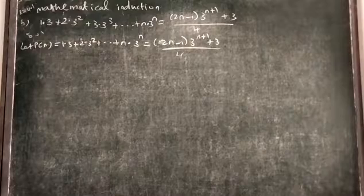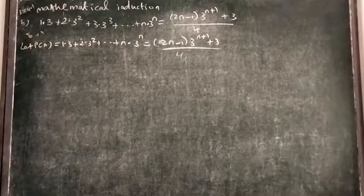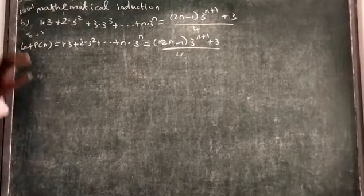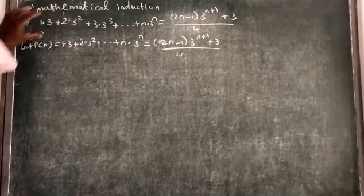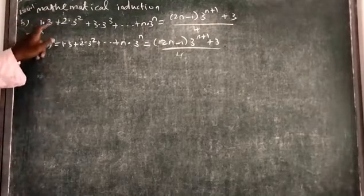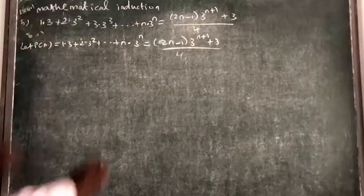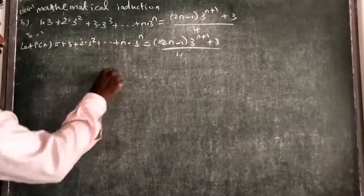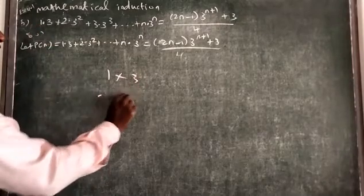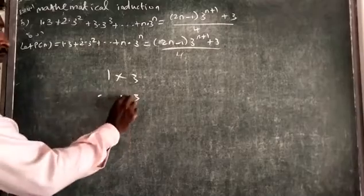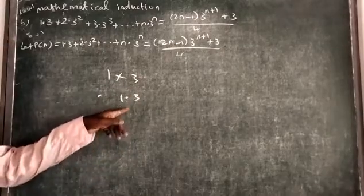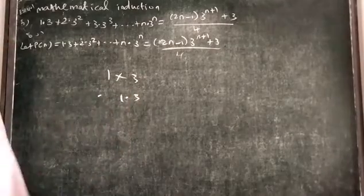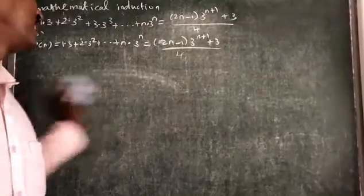In this video we are going to discuss one more sequence in Mathematical Induction and verify the result. First we take the question as P of n. Note that the dot here represents multiplication — so 1 dot 3 means 1 times 3. It is not a decimal number.